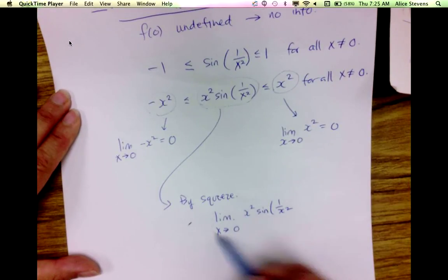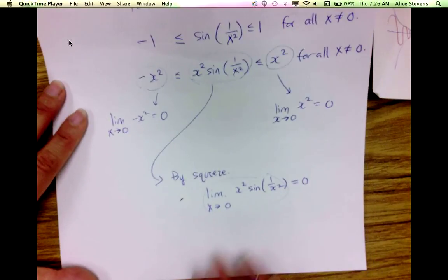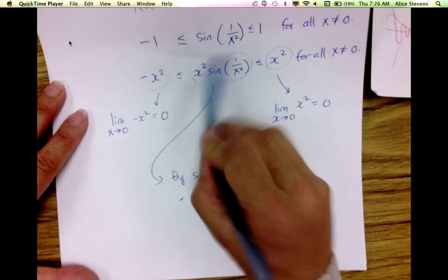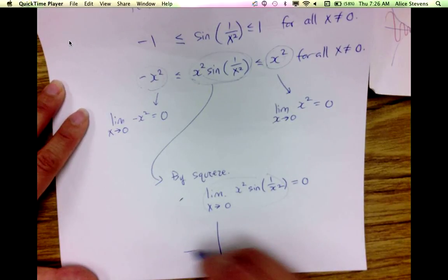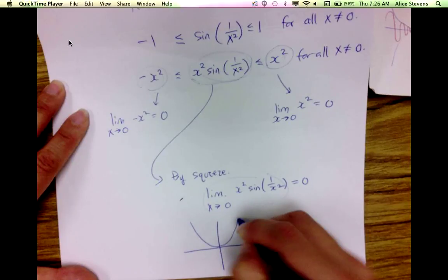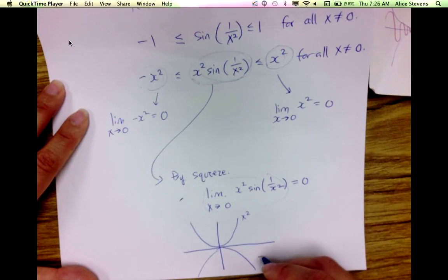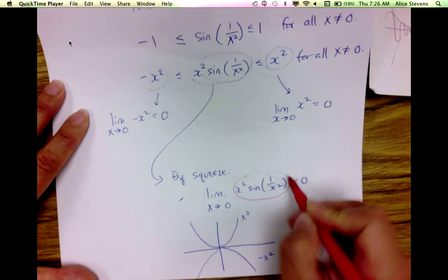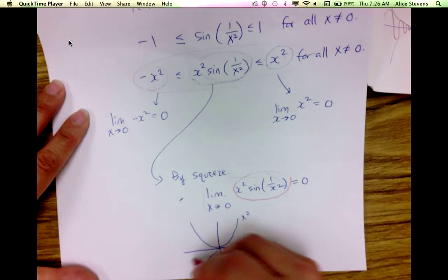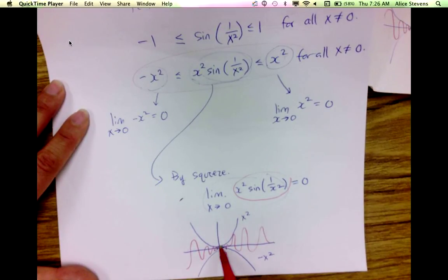The idea is that this function was squeezed between these two functions. Here's a quick picture of what that looks like: here's x squared, here's negative x squared, and this function is squeezed between them — maybe it does something like that. We can see the limit as we get close to 0 for all three functions is 0.